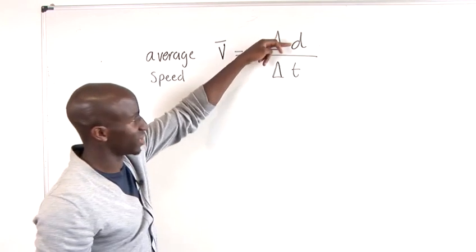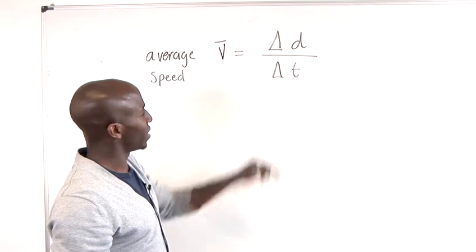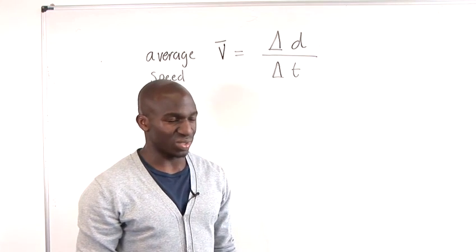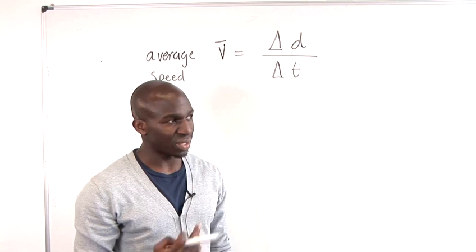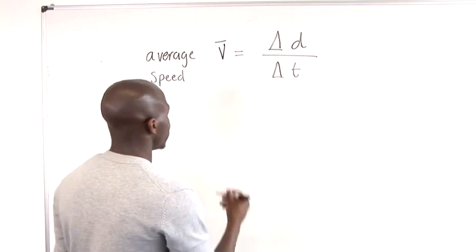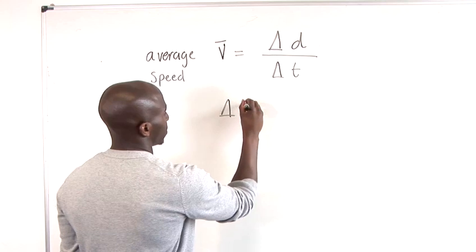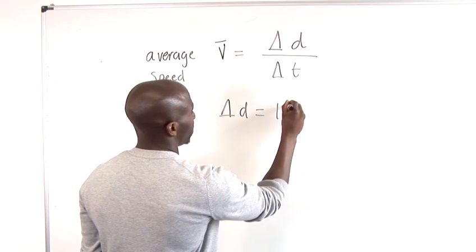So you've basically got distance divided by time. Now imagine if we've got a sprinter who does a hundred meters.